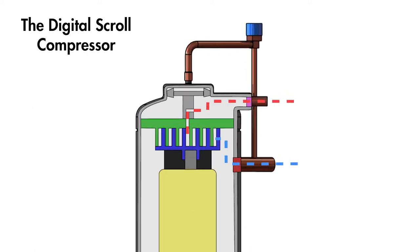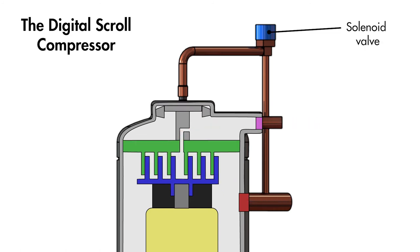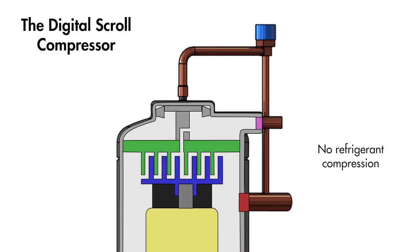This unloading mechanism is activated by a solenoid valve and what it does is slightly separate the scroll set on the vertical axis. When the compressor is in the unloaded state, the electric motor still runs and the orbiting scroll still orbits but there is no refrigerant compression occurring.